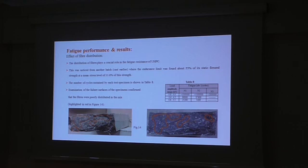So let's talk about the fiber distribution. The distribution of fiber is critical to the load-bearing resistance of ultra-high performance concrete. This was noted from random patch-cast earlier where the instrument was just about 55% of the fibers on the surface. The actual published is 67% of the fibers on the surface. The amount of cycles sustained by each specimen can be seen in the stress level plot. Further examination of the lateral surface of the specimen confirmed that the fiber was well distributed in the mix, and you can see here from the high-fidelity bed.